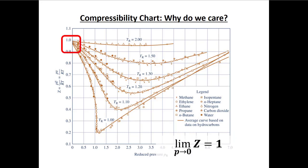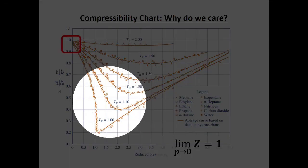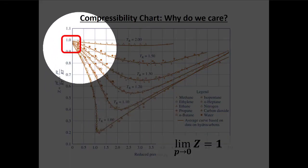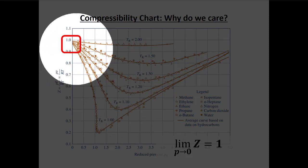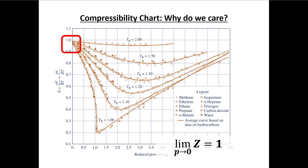All of these lines — at the reduced pressure equals zero end — intersect at one on the Z axis. So what does all this mean? Why are we talking about this compressibility factor?